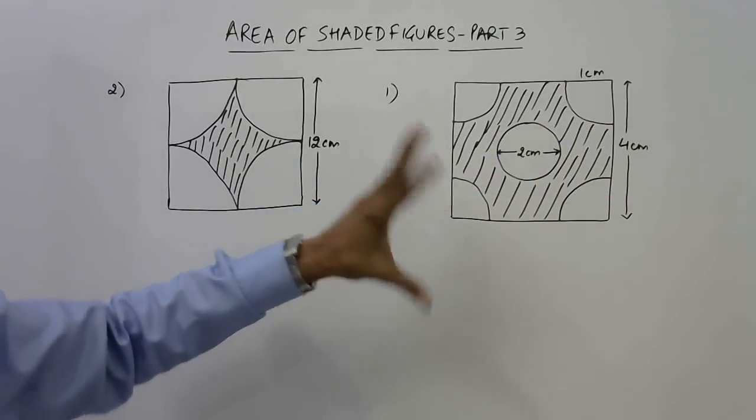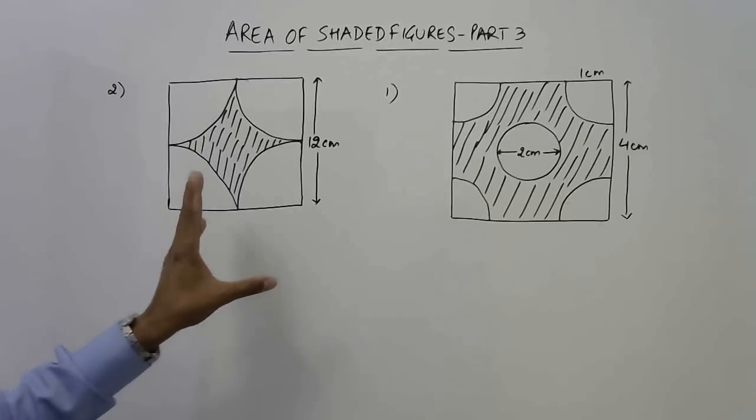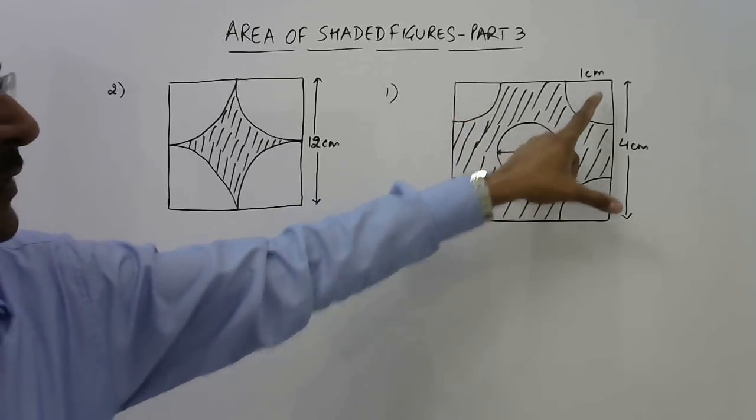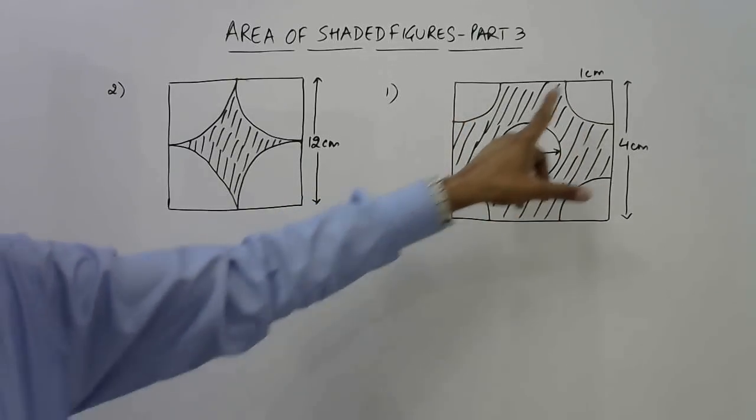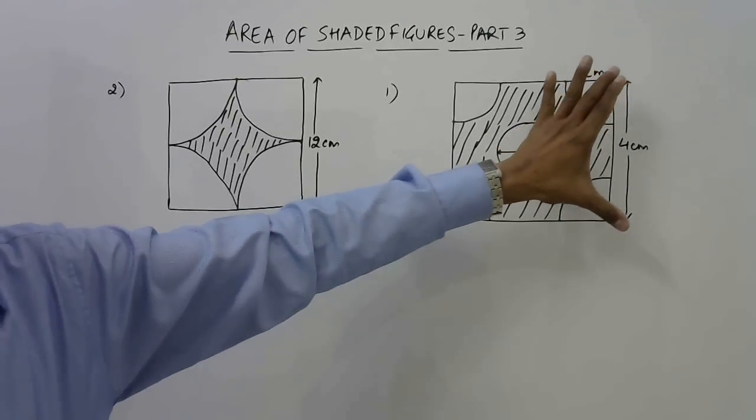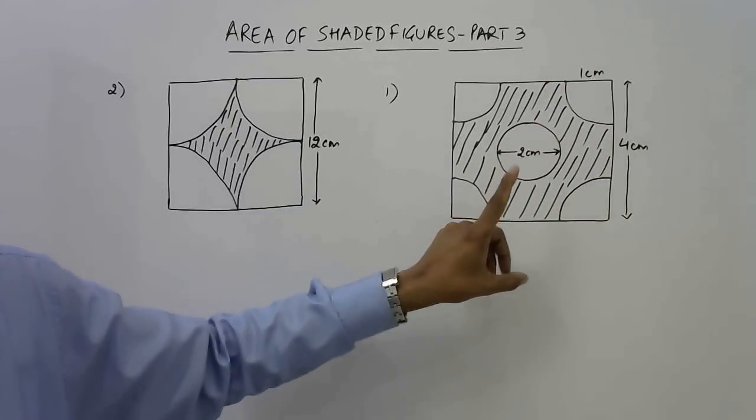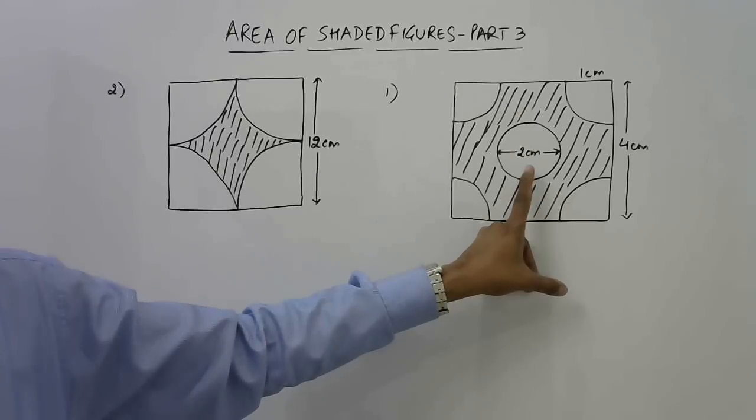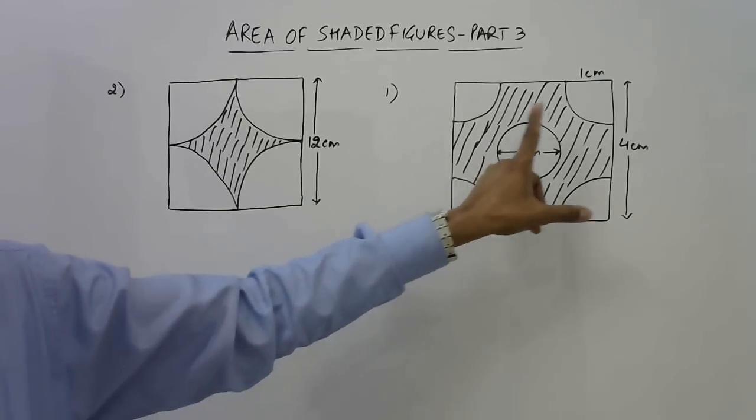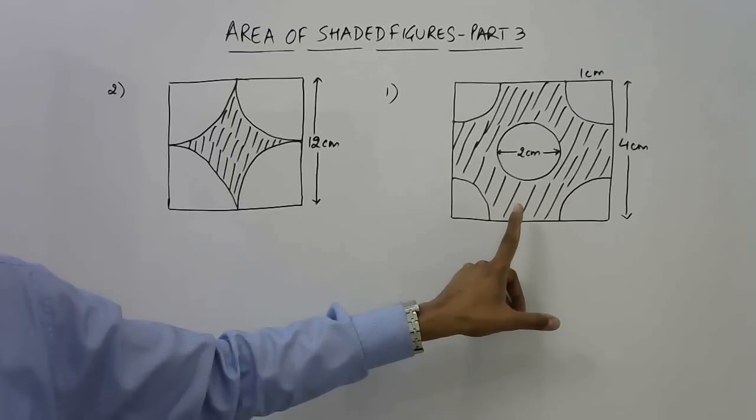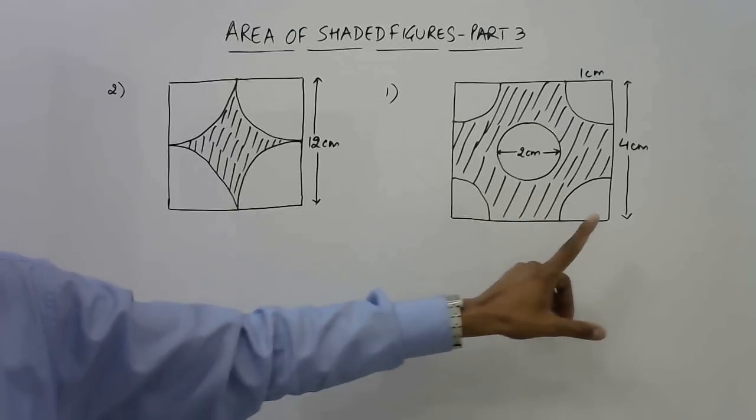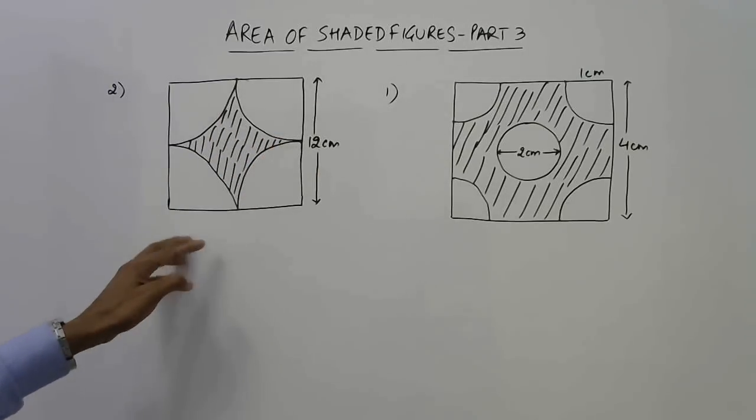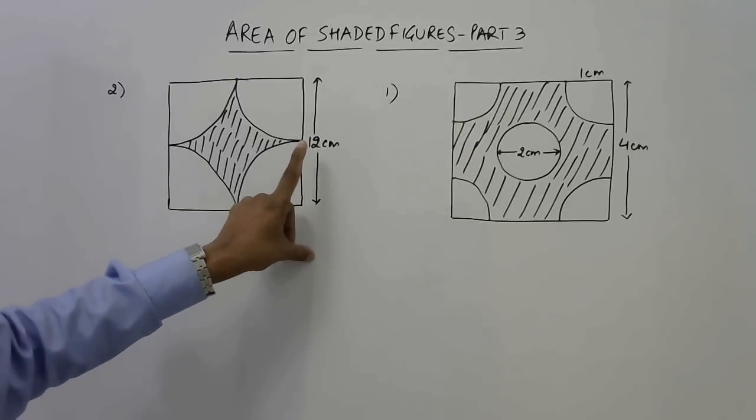In both figures we have a square and some portion is shaded and some is unshaded. In this one we have four quadrants cut off from the four corners, all with radius one centimeter. The square has a side of four centimeter. In between we have a circle which is unshaded, with a diameter of two centimeters. We need to find this shaded area of the square which is not included in these unshaded figures.